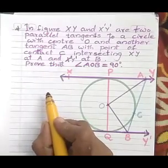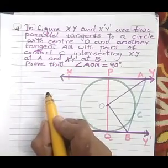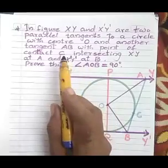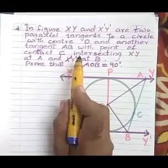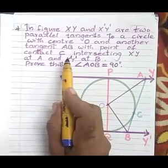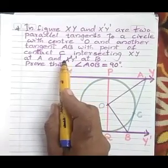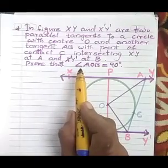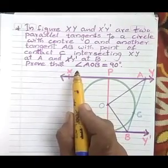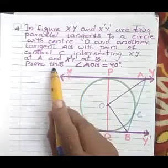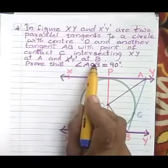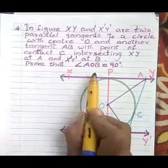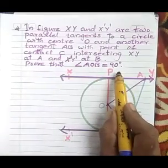Figure xy and x-dash y-dash are two parallel tangents to a circle with center O, and another tangent AB with point of contact C intersecting xy at A and x-dash y-dash at B. Prove that angle AOB equals 90 degrees.